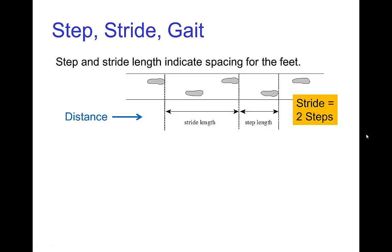A few things to understand about the vocabulary of walks. First, we have the step and stride. A stride is simply two steps, so one full cycle of a walk would be a stride. We talk about step length and stride length — the stride length is the distance that the character travels when walking one full cycle.